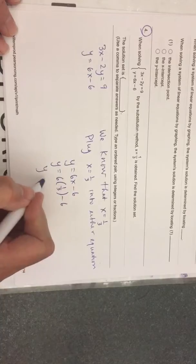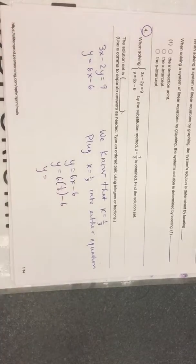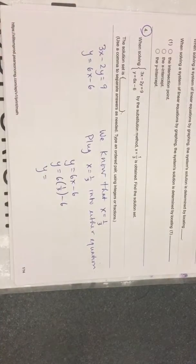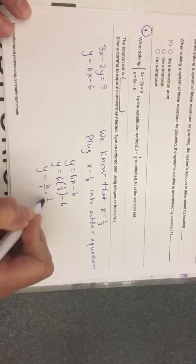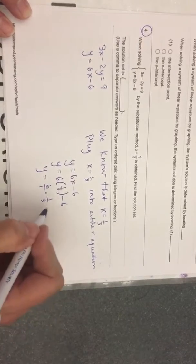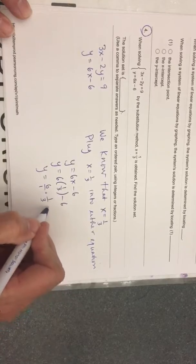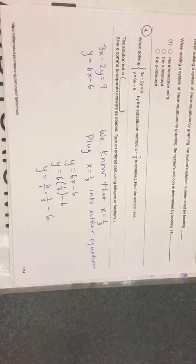6 times one-third is 2. I will show the work for that. 6 is 6 over 1, so 6 over 1 times one-third minus 6. You're going to multiply those two fractions.